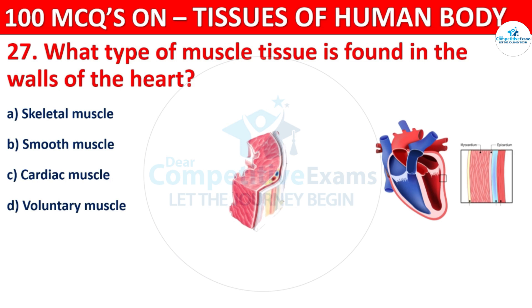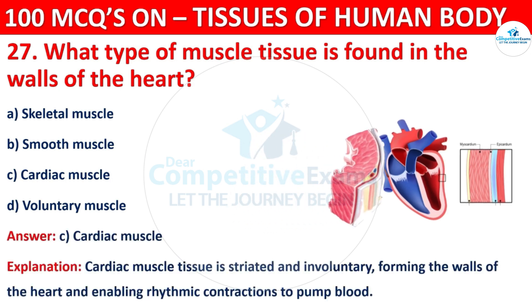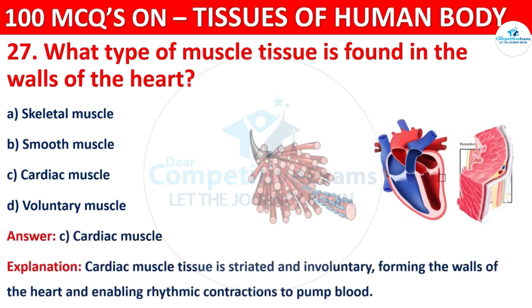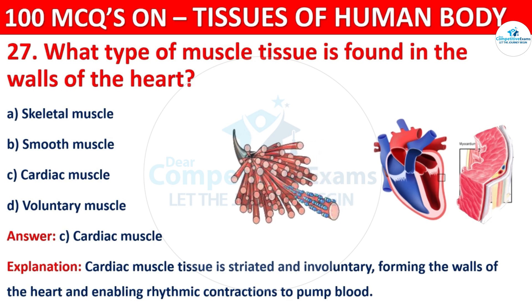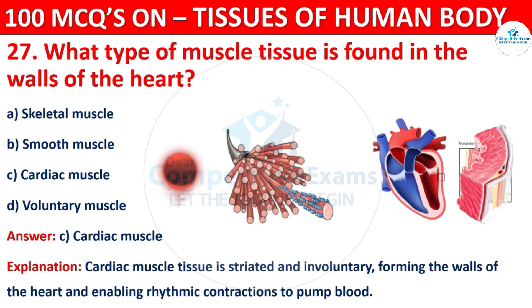The correct answer is C, i.e. Cardiac Muscle. Cardiac Muscle tissue is striated and involuntary, forming the walls of the heart and enabling rhythmic contraction to pump blood.